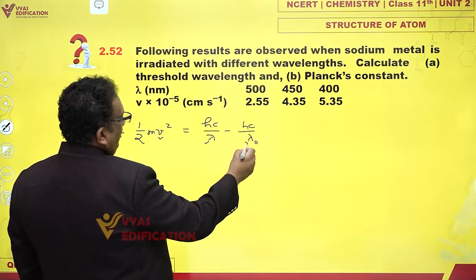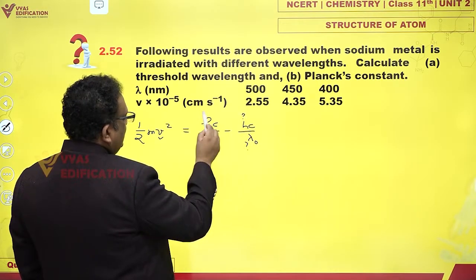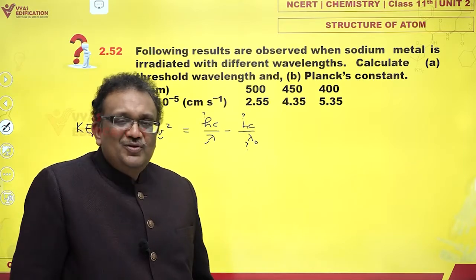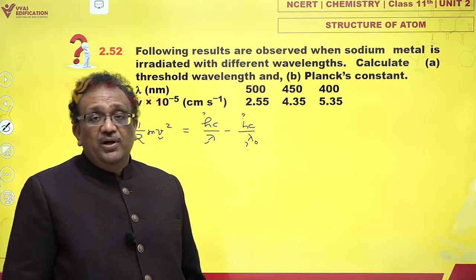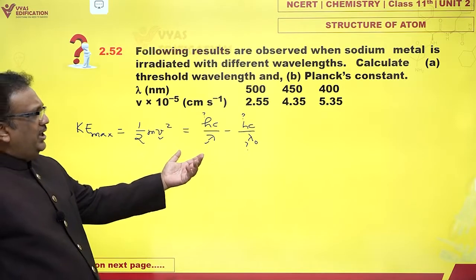I am not given lambda naught of course. I am not given H. I can shamelessly assume C, velocity of light, and even mass of electron for that matter. I have known things, I just substitute, I get equations.